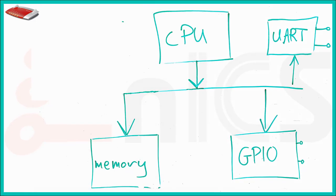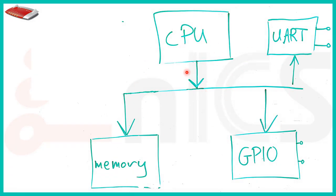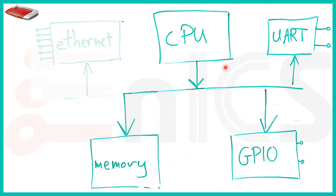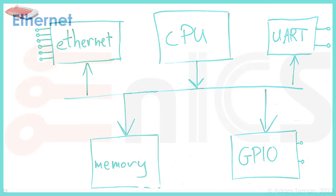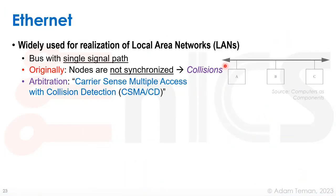Here's the current status of our system: we have our CPU, bus, memory, GPIOs, and UART. Let's add something that can really help us build our router. What we're going to add is Ethernet. Ethernet was invented in 1973 and is widely used for the realization of local area networks.